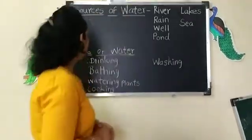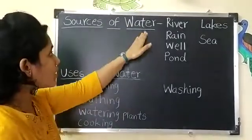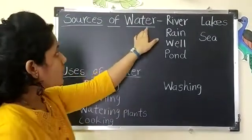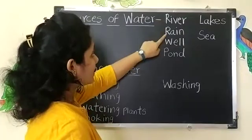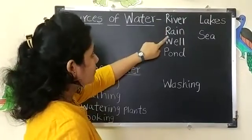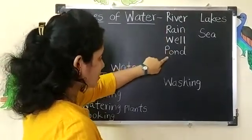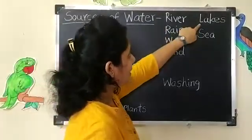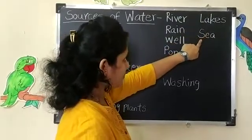So here are the sources of water. We get water from river, rain, well, pond, lakes and sea.